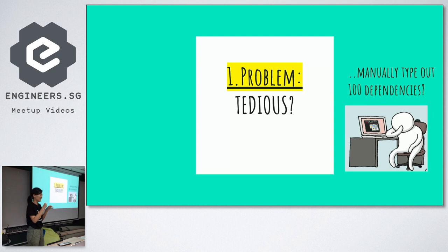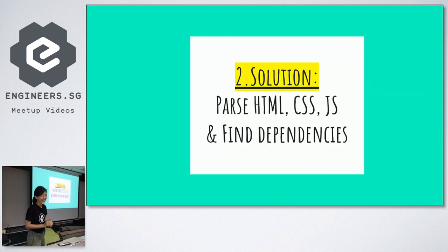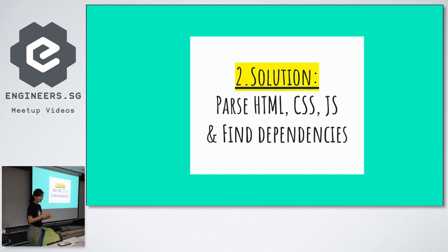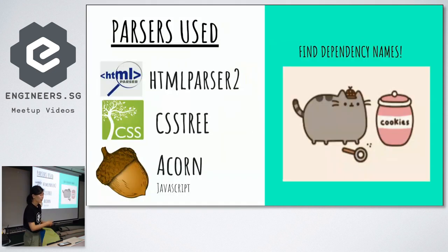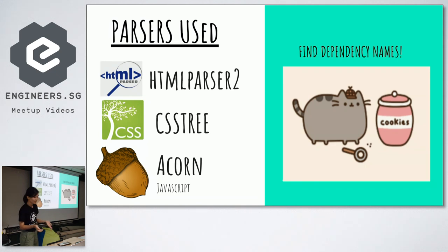Imagine having to write 10 or 20 dependencies yourself — not fun. The solution is the developer tool I built, which parses through HTML, CSS, and JavaScript files to detect these dependencies. For parsers, I use an HTML parser tool for HTML files, CSS3 for CSS files, and Acorn for JavaScript files.